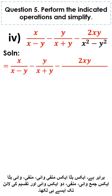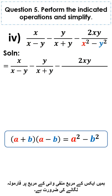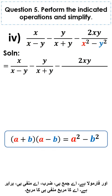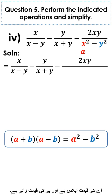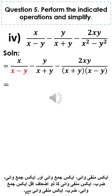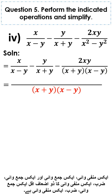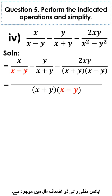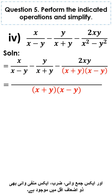The expression is x divided by x minus y, minus y divided by x plus y, minus 2xy. Applying the formula a plus b into a minus b equals a square minus b square on x square minus y square, with a equals x and b equals y, we write x plus y into x minus y. The LCM of x minus y, x plus y, and x plus y into x minus y is x plus y into x minus y.